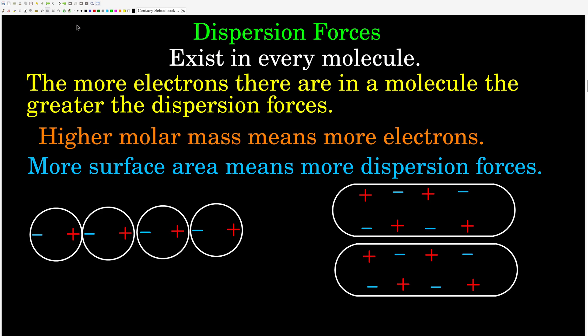Starting with dispersion forces, we're going in order of weakest to strongest. Dispersion forces are the weakest of these three on a one-to-one basis, but they can add up. Every molecule and every atom has dispersion forces. Dispersion forces are present whenever there are electrons present, and the more electrons there are, the greater the strength of the dispersion forces.